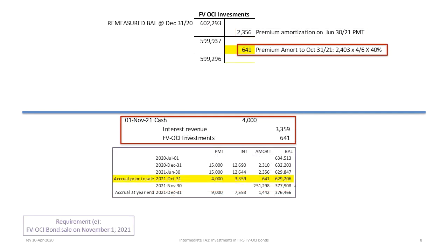Our next step is to record the disposal of the bonds, which must be done in two stages. The first is to bring the premium amortization up to date for the portion of the bonds that are sold. On November 1, 2021, the company will receive cash of $4,000 — calculated as $15,000 times 40% sold times four-sixths (four months that Tiberius continues to hold the bonds). We then determine the interest revenue and premium amortization for the FVOCI investment.